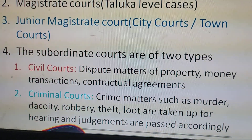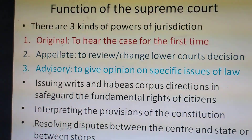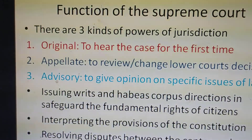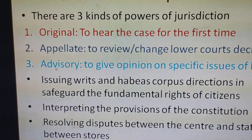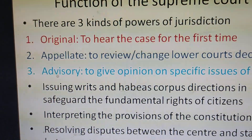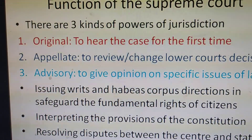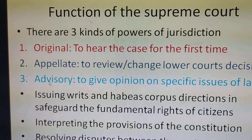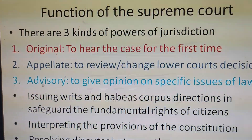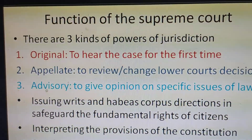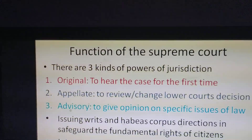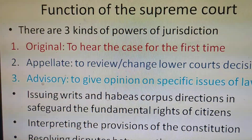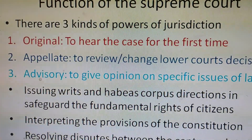The second part of the question is about the functions of the Supreme Court. The Supreme Court functions in three types of jurisdictions. First is original jurisdiction — anyone can go directly to the Supreme Court with their case. Second is appellate jurisdiction — if a person is not satisfied with a subordinate court or High Court decision, they can appeal to the Supreme Court to review or change that decision.